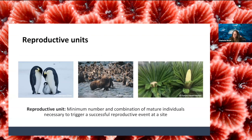A reproductive unit is defined as the minimum number and combination of mature individuals necessary to trigger a successful reproductive event at a site. Examples of ten reproductive units are ten breeding pairs, or ten reproducing females plus one male in a harem. For plants, simply indicating whether the species is monoecious or dioecious is really helpful. For African wild dogs, each pack is considered one reproductive unit. The reproductive units threshold is especially important for species with very small global population sizes, since the population size threshold is a percentage.